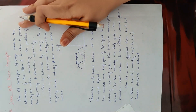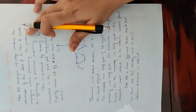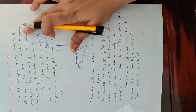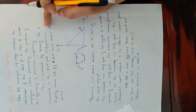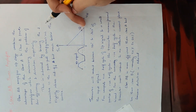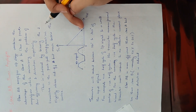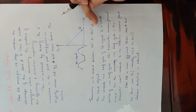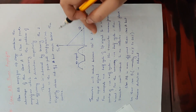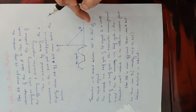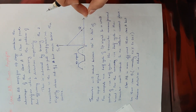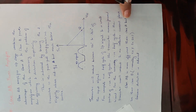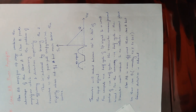By adding a small bias, we combine the advantages of both classes while minimizing their disadvantages. When we fix the Q-point slightly above the cutoff but well below the center, the conduction angle is between 180 and 360 degrees. Efficiency is in the range of 50 to 60 percent, and crossover distortion is reduced.